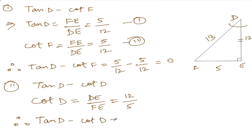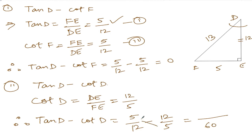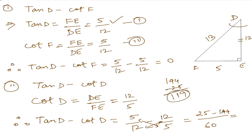Therefore tan D minus cot D equals 5/12 minus 12/5. Taking LCM of 60: (5×5 minus 12×12) divided by 60, which is (25 minus 144) divided by 60. That equals negative 119 divided by 60. The sign is negative because the greater number is negative. So the answer is minus 119 over 60. That's all — thank you so much, we will meet in the next video.